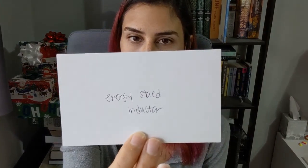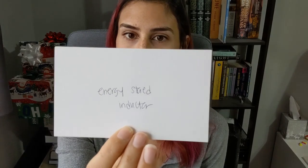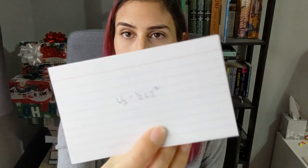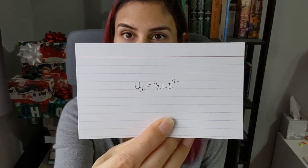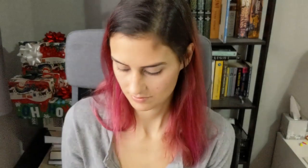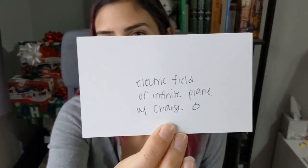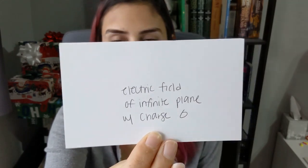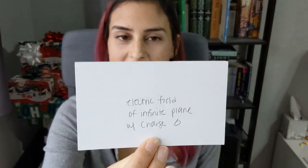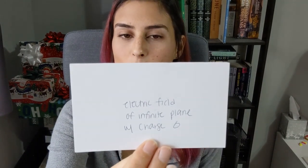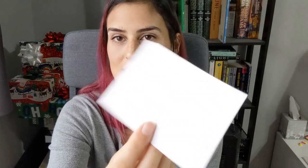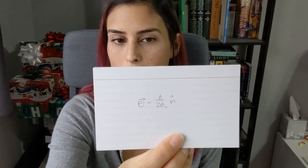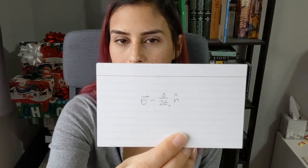Energy stored in an inductor: U sub L equals one half L I squared. The electric field of an infinite plane of charge sigma: E equals sigma over 2 epsilon naught, n-hat, where n-hat is the direction perpendicular to the infinite plane of charge.